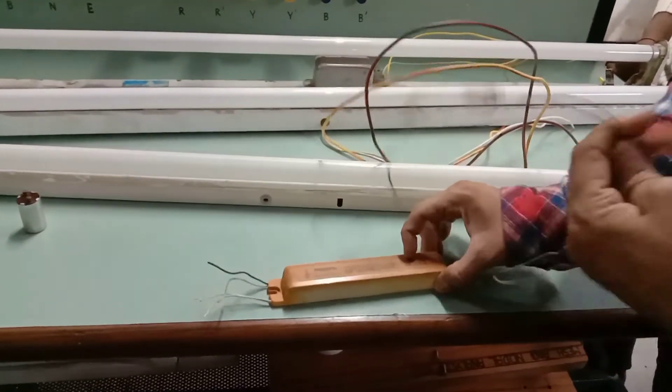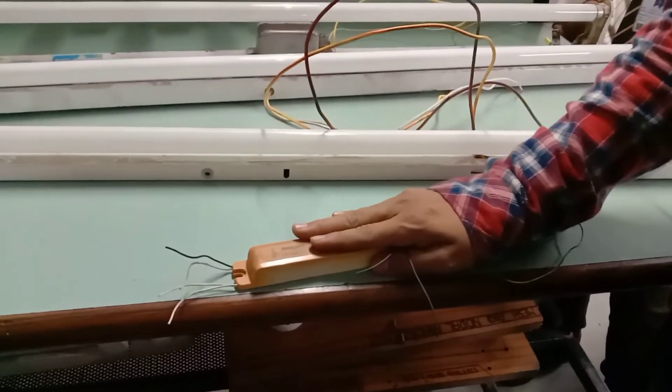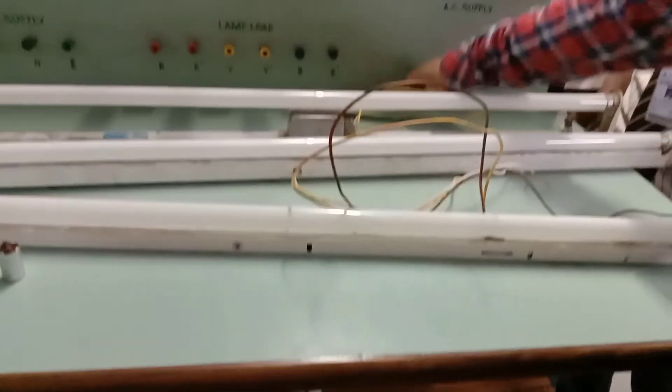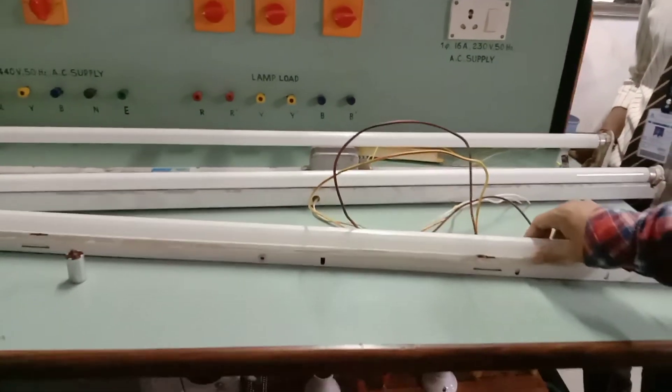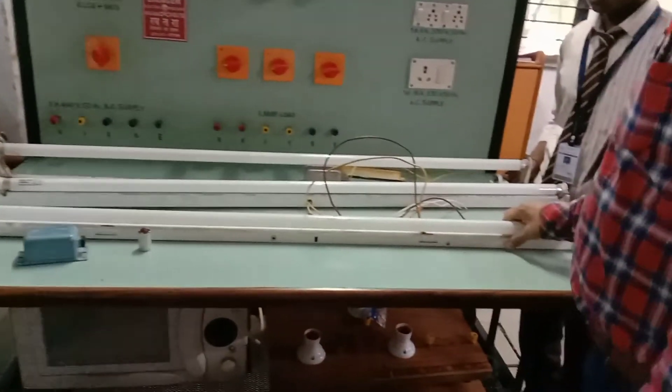Here we have the phase, neutral, and these are the two other terminals. Nowadays ballast is also replaced by LED tube light. It is also everywhere nowadays. It is used. It is of 18 watts.